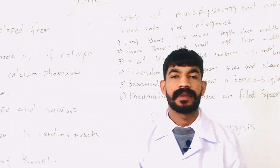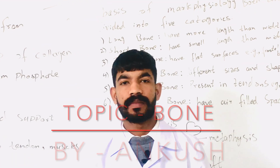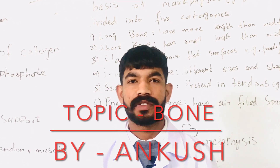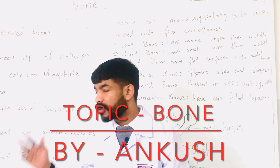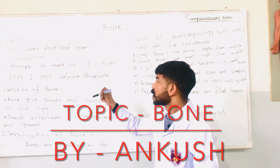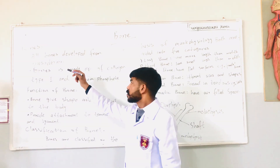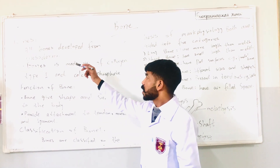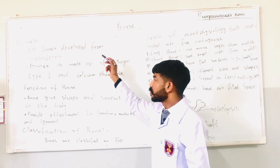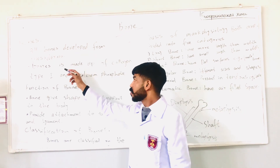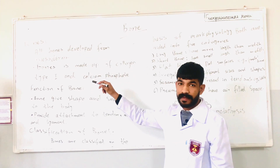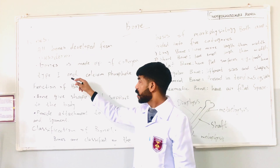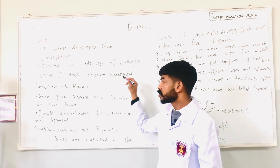Hi everyone. My name is Ankus from Oceania Medical University. Today we are discussing about bones. All bones develop from mesoderm. Bone is made up of collagen type 1 and calcium phosphate.